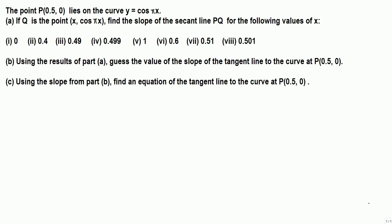In this question we are given the point P(0.5, 0) and it says this point lies on the curve y = cos(πx). That means when we plug in x = 0.5 we get y = 0. Now Q is the point (x, y) where y is given by cos(πx), so Q is a generic point on the curve.